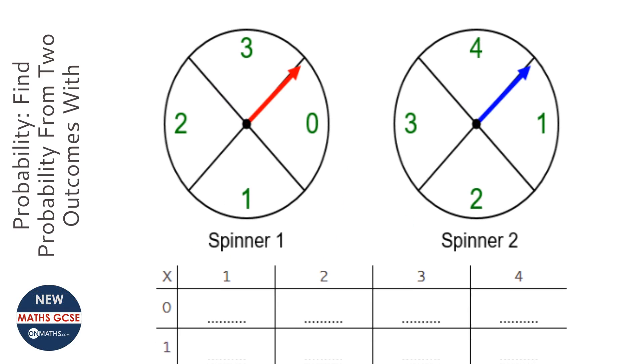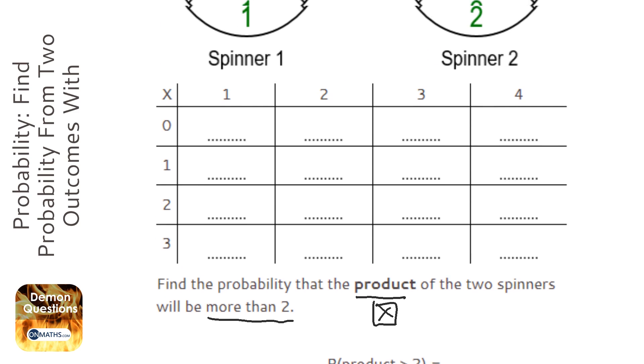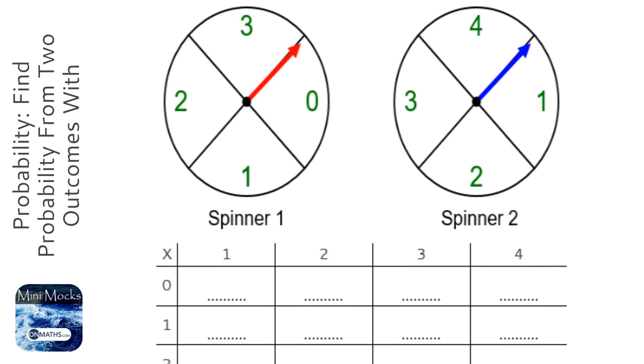Okay, so a few things we need to realize with this question. First of all, what does product mean? Product just means times—it means if you times them together, that's the answer. And we're looking for more than two, and we'll come back to that later. So first of all, we're going to do a sample space diagram for this.